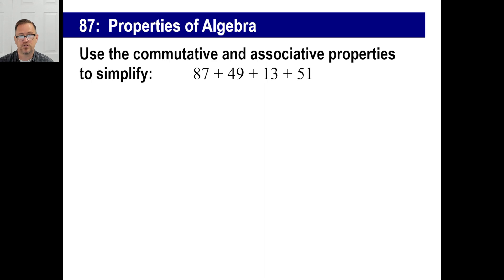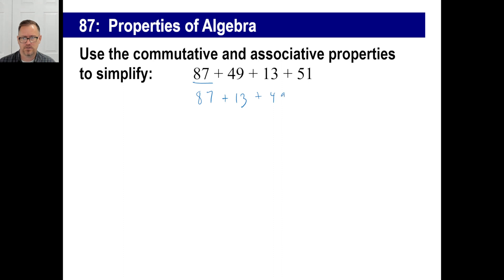So they'll do things like this — use the commutative and associative properties to simplify this. You look at it and instead of stacking these up four deep and adding them, you look and go: wait a minute, 87 plus 13 — let's group those. Then 49 plus 51 — put it in that order. It doesn't matter what order you do stuff in. What's 87 plus 13? 100. What's 49 plus 51? 100. 100 plus 100? 200. That's it.